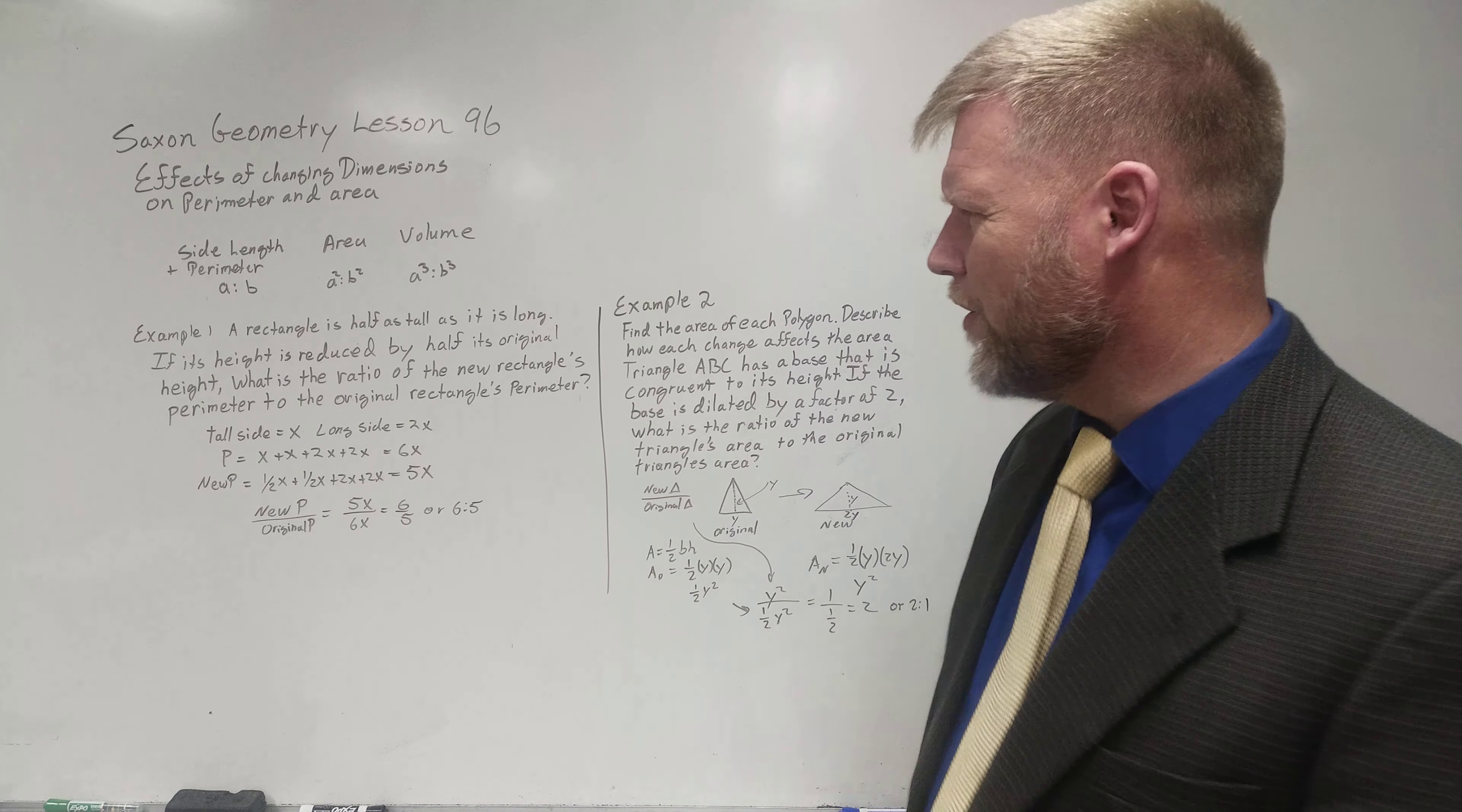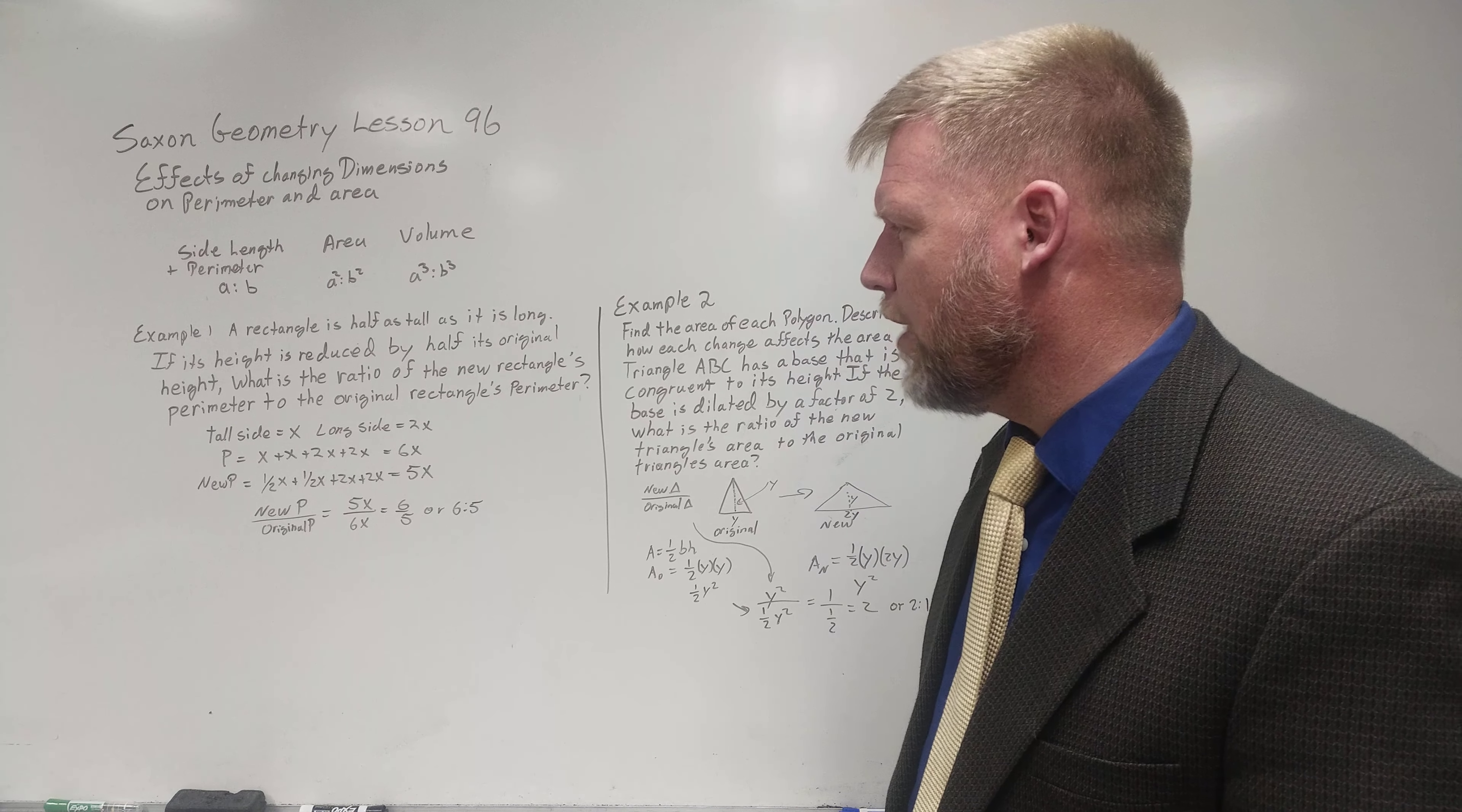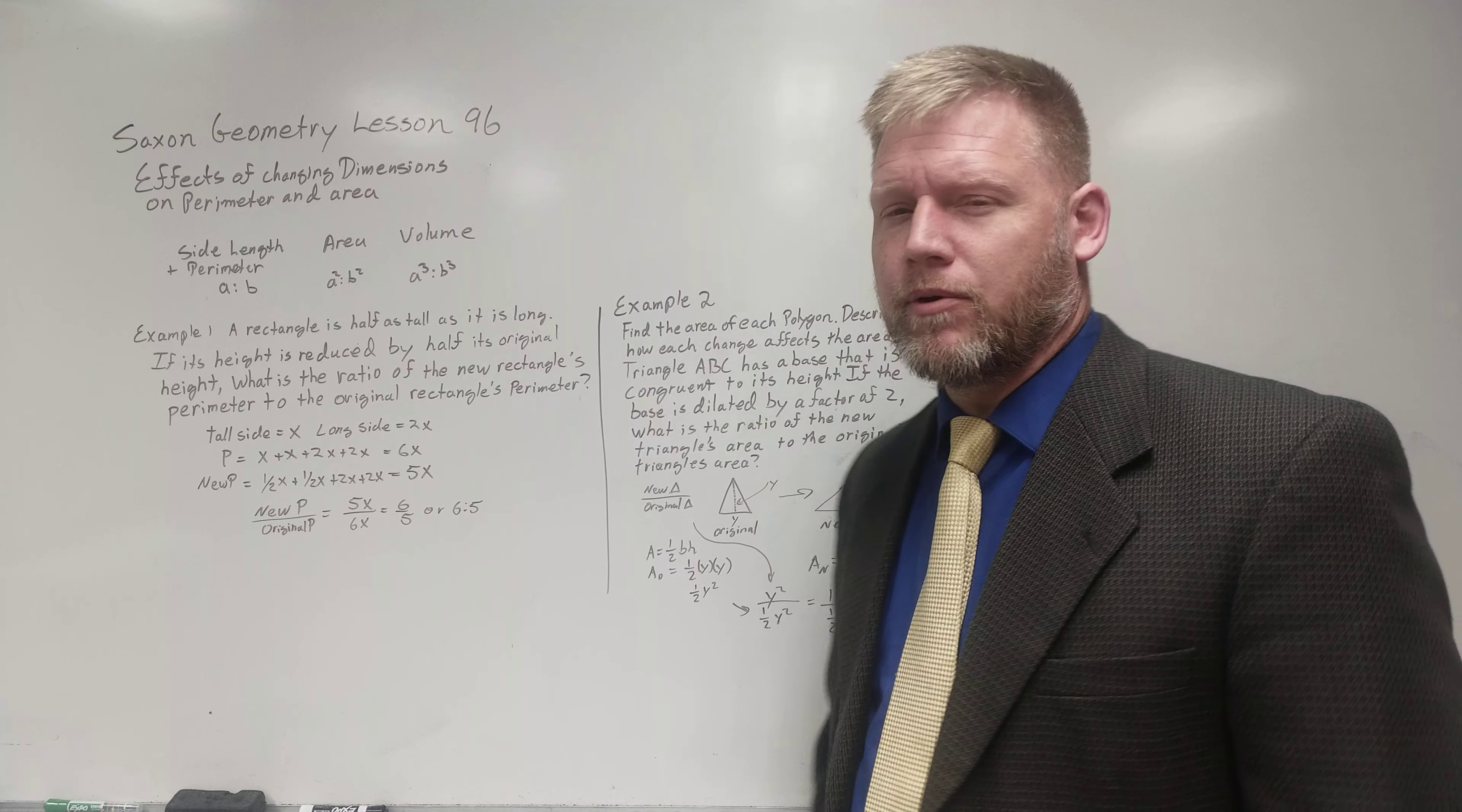Now watch example one here. A rectangle is half as tall as it is long. If the height is reduced by half its original height, what is the ratio of the new rectangles perimeter to the original rectangles perimeter?